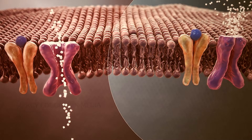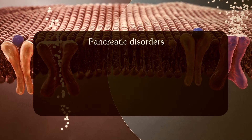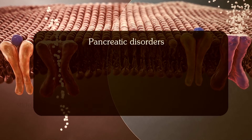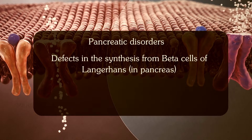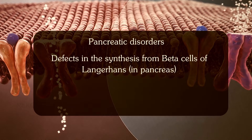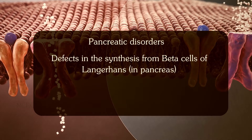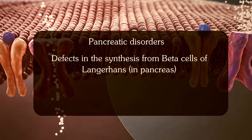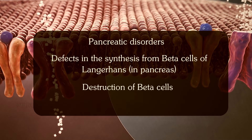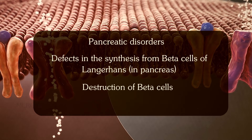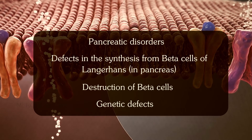Insulin deficiency may be due to pancreatic disorders, defects in the synthesis from beta cells of Langerhans in the pancreas, destruction of beta cells, genetic defects, etc.